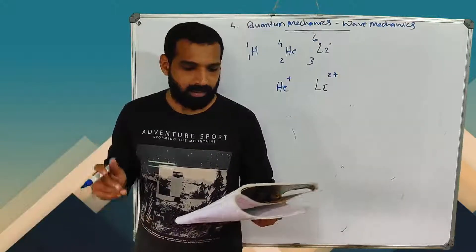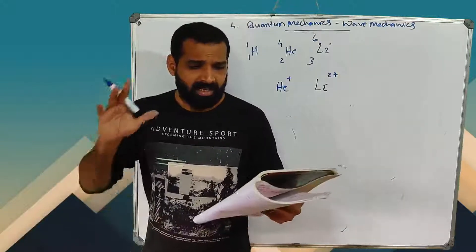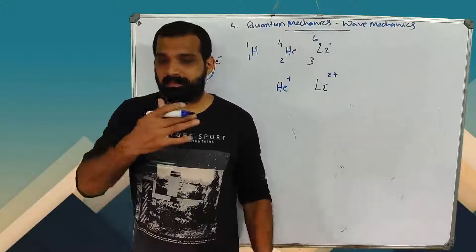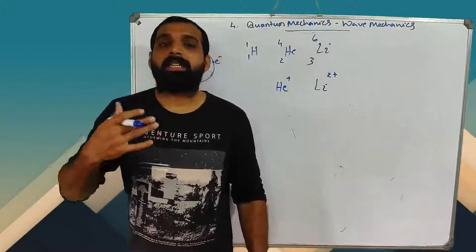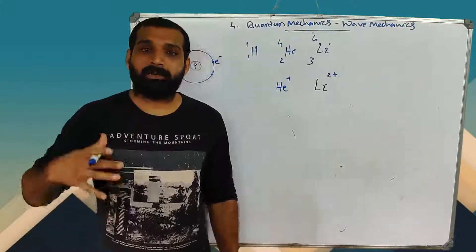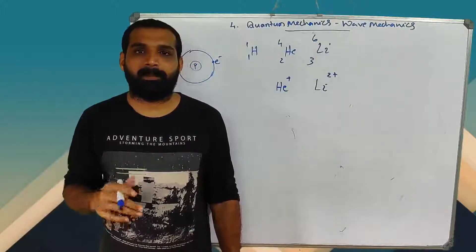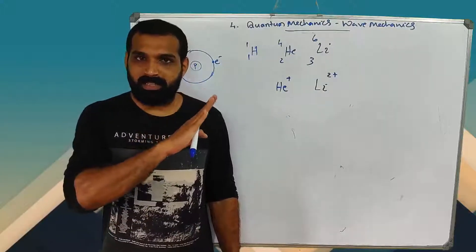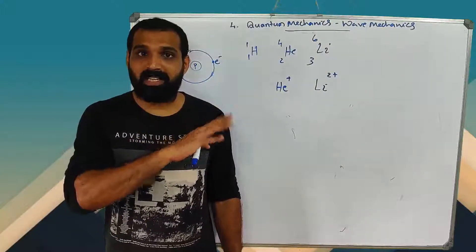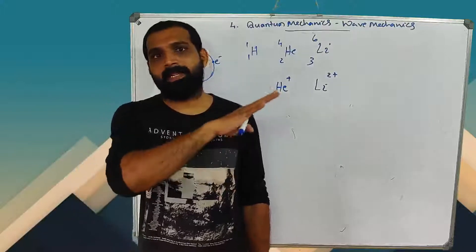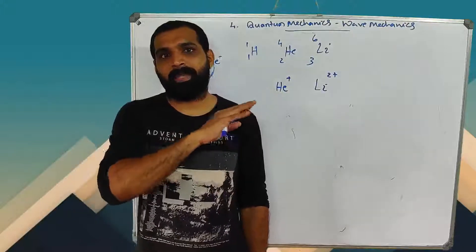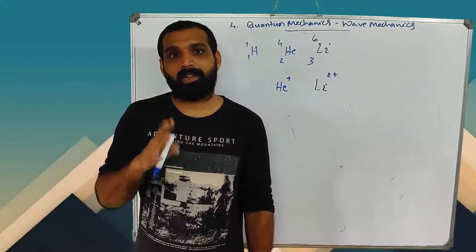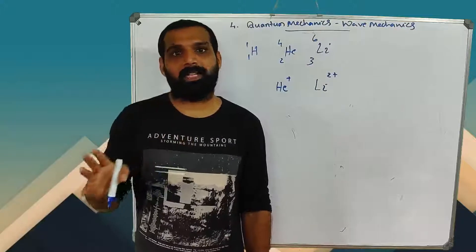The model should account for everything. We need quantum mechanics — pure quantum mechanics. What we have done with Bohr is a semi-classical approach. Rutherford is completely classical. Bohr is semi-classical with quantization applied.